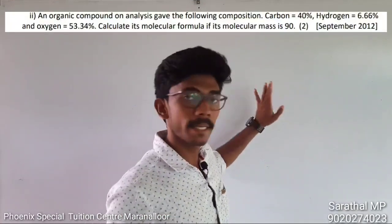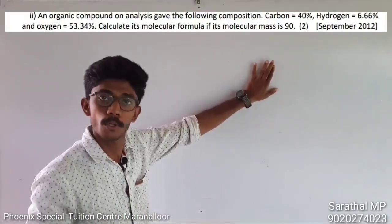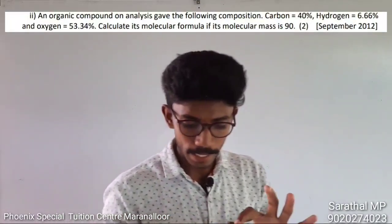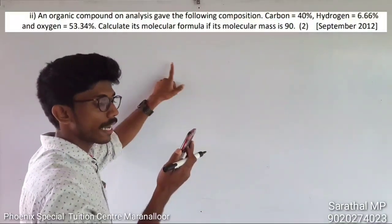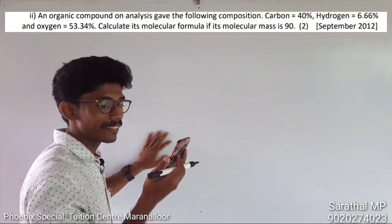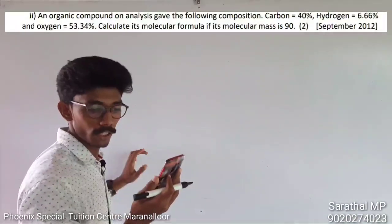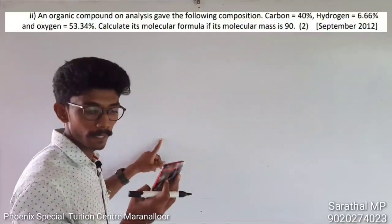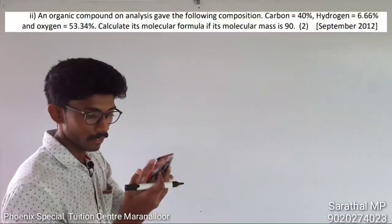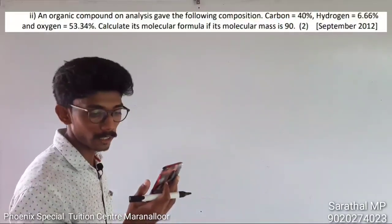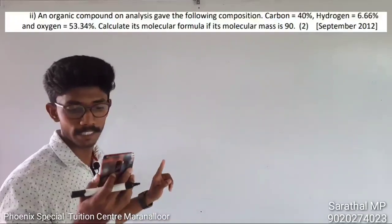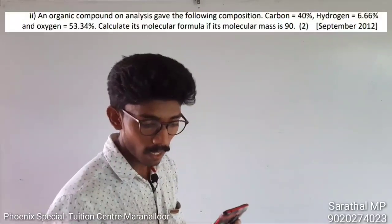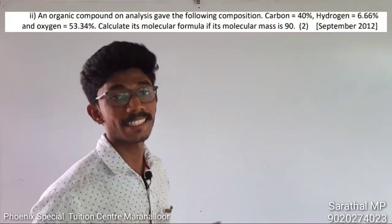Hi friends, welcome to Labrathes Middlesex. We have a problem with empirical formulae and molecular formulae. An organic compound on analysis gave the following composition: carbon is 40%, hydrogen is 6.66%, and oxygen is 53.34%. Calculate its molecular formula if its molecular mass is 90.